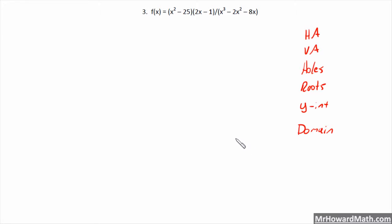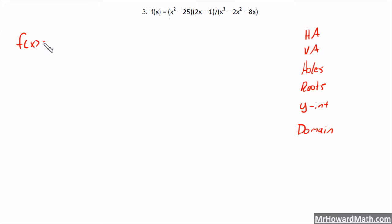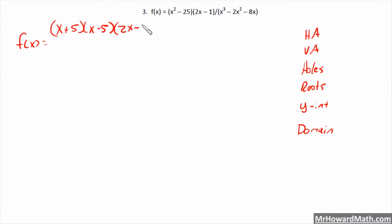This example will be pretty complicated. This is continuing our look at sketching rational functions. The first step is to factor. So the numerator factors as (x+5)(x-5) because we have a difference of two squares, and then we have the (2x-1) already.